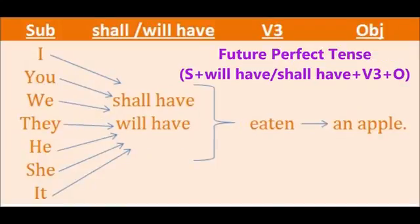The second tense is future perfect tense. The structure is subject plus will have or shall have plus V3 plus object. Examples: I will have eaten an apple, you will have eaten an apple, they will have eaten an apple, he shall have eaten an apple, it will have eaten an apple. You can use will have for all the subjects.